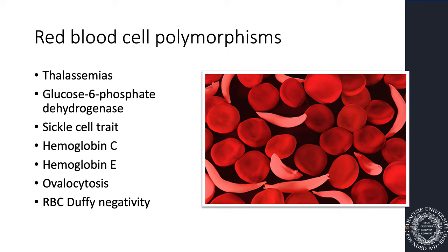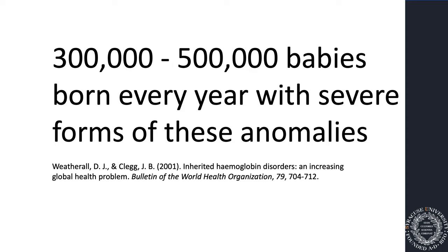This is called a deleterious attribute — it's beneficial in the majority of people, but in a subgroup it's actually deadly. Malaria is even more deadly than sickle cell disease historically. Up to half a million babies are born every year with severe forms of these anomalies, and sickle cell trait is not the only one. Malaria has driven these genetic polymorphisms that cause health complications for people their entire lives.